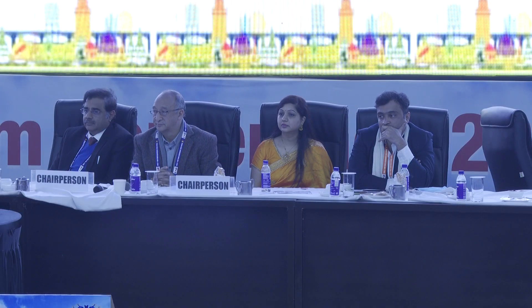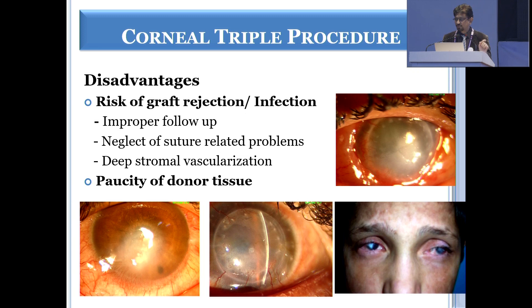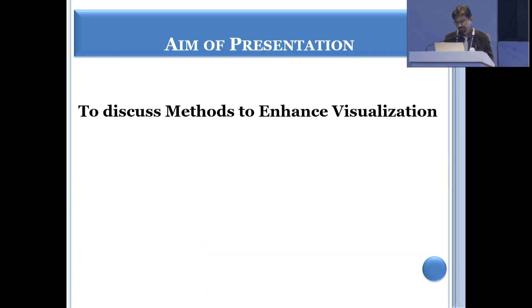When you have a cataract with a corneal opacity, the ideal treatment is to do a corneal triple procedure. However, there are situations wherein you can have an opacity with vascularization, where there's a risk of graft rejection, the patient is one-eyed, and cannot come for follow-up. In all these scenarios, if you can do a cataract surgery and the opacity is not completely covering the cornea, you can provide a reasonably good visual outcome for the whole life of the patient. The idea of this presentation is to discuss methods to enhance visualization, because whenever there's a corneal opacity or haze, the visibility to do a cataract surgery is difficult.